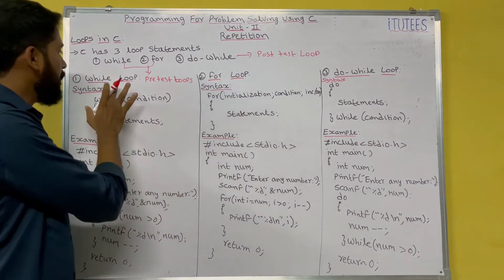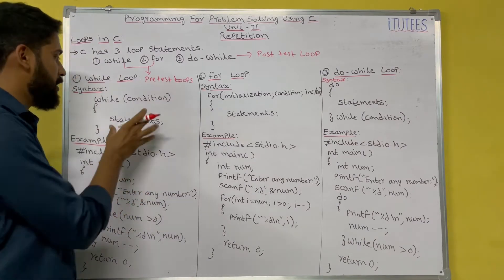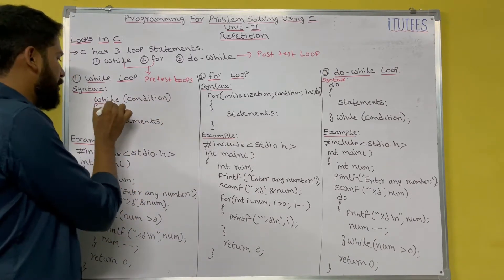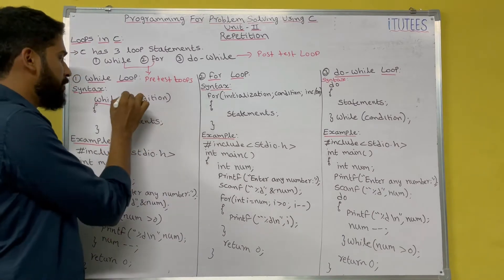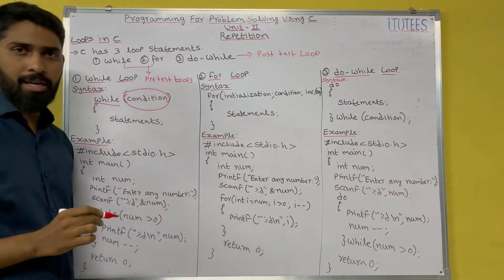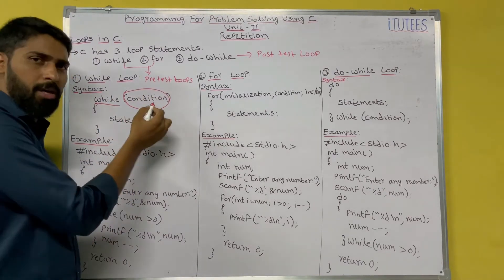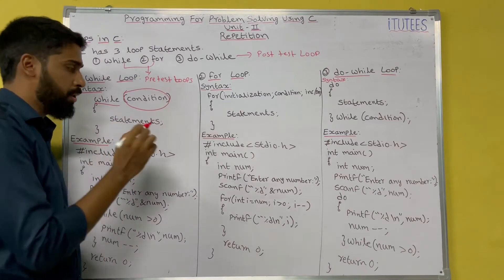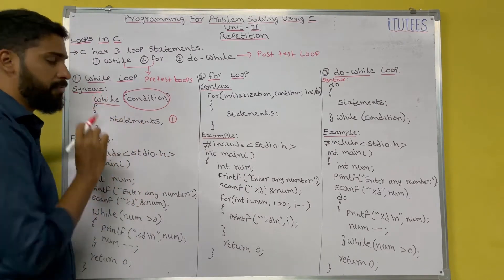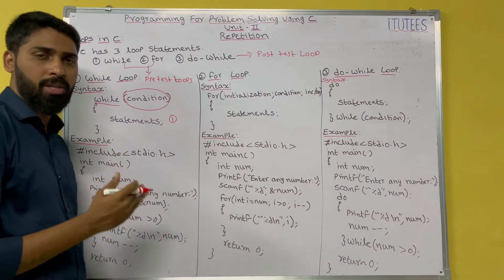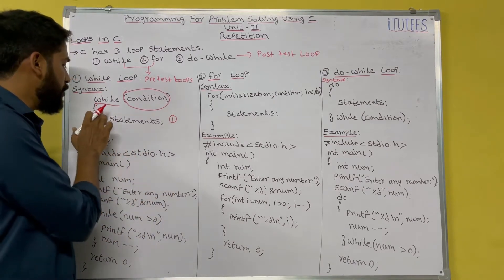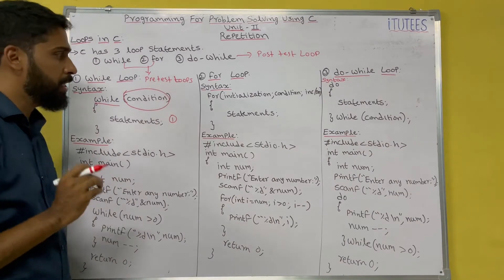Now let's look at the while loop syntax. You write the while statement, then in brackets you write the condition. If you have only one statement, you don't need flower brackets. If you have more than one statement to execute, then you use the curly brackets.